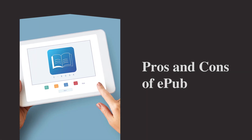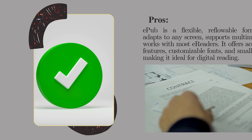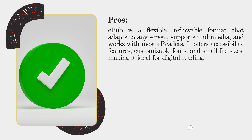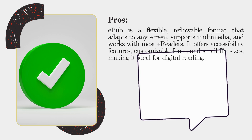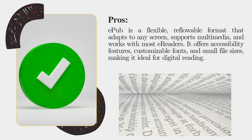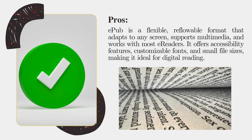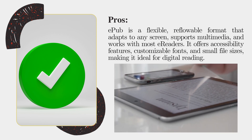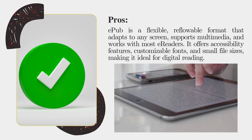Pros and Cons of EPUB. Pros: EPUB is a flexible, reflowable format that adapts to any screen, supports multimedia, and works with most e-readers. It offers accessibility features, customizable fonts, and small file sizes, making it ideal for digital reading.